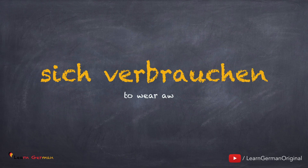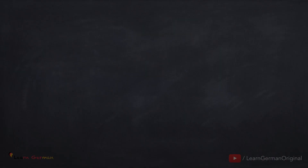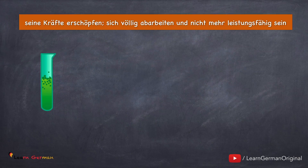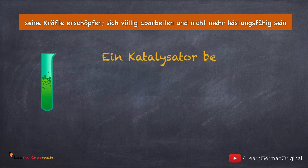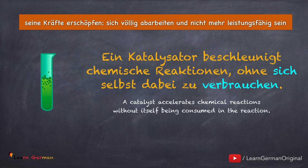Verbrauchen kann auch reflexiv sein. Das bedeutet seine Kräfte erschöpfen oder sich völlig abarbeiten und nicht mehr leistungsfähig sein. Hier ist ein Beispiel: Ein Katalysator beschleunigt chemische Reaktionen ohne sich selbst dabei zu verbrauchen.